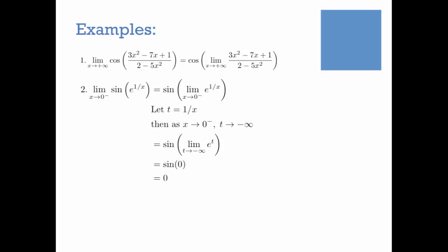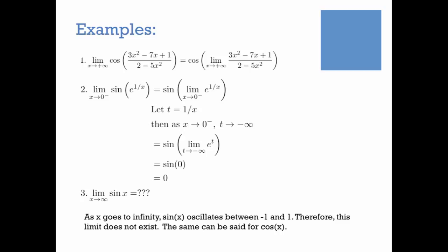If any of these problems seem tricky, rewind, hit pause, work through them yourself. Now, how about the limit as x goes to plus infinity for sine of x? Think about the graph — as x goes to infinity, sine of x continues to oscillate forever between minus 1 and 1, so the limit does not exist. You can never get arbitrarily close to any single value. The same can be said for cosine of x.